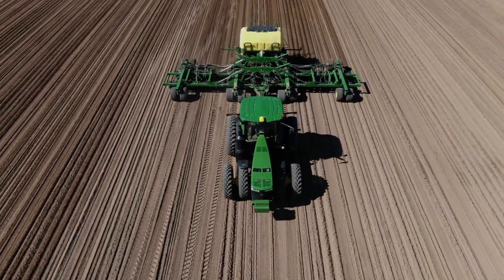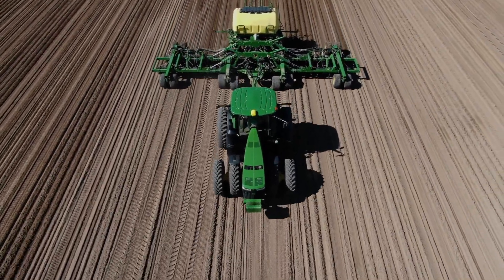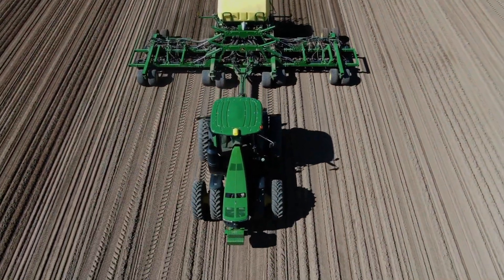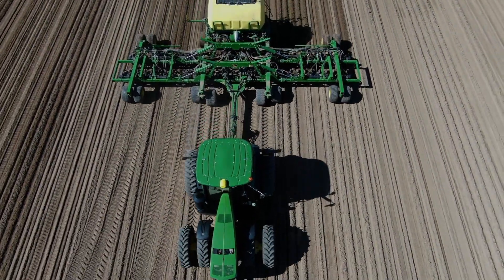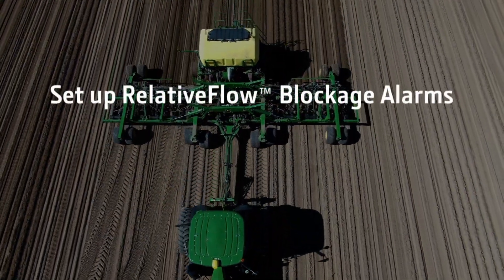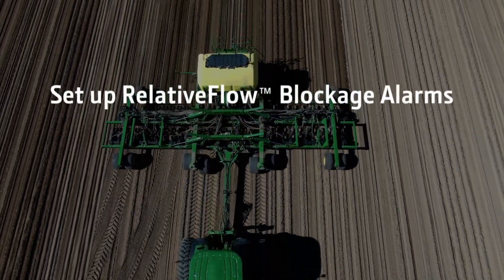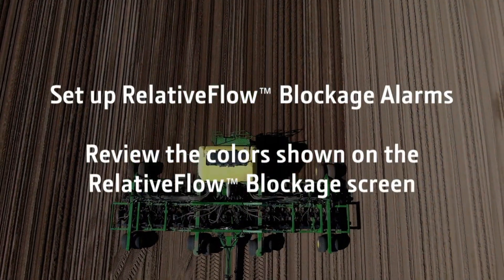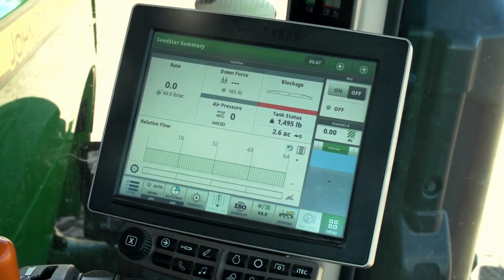Do you know what the various colors mean on the relative flow blockage page? In this video I will show you how to set up relative flow blockage alarms and review the colors shown on the relative flow blockage screen. Relative flow blockage automatically updates when the seeder is switched from single rank to dual rank and back.